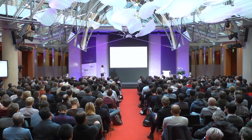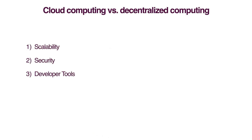When looking at cloud computing versus decentralized computing, decentralized computing is something we don't really fully understand. So what I'm going to do is focus on three things: the first is scalability — how that plays out in these two different environments; the second is security, which is extremely important; and the third is the state of developer tools.